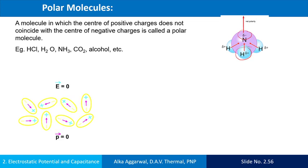In this diagram, a sample of the polar molecule is placed in some space where the electric field is 0. In the absence of the external electric field, the permanent dipoles of the molecules orient in a random direction and hence the net dipole moment of the sample is 0.